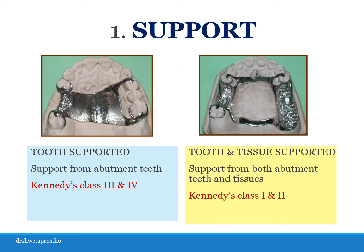If we talk about RPD, removable partial denture, see the first picture — there is a tooth bounded saddle. The source of support in this case will be the teeth or the abutments on which the rests are placed. Now see the second picture: on one side there is a tooth bounded saddle, and on the other side there is a distal extension edentulous space — a distal extension saddle area with no distal abutment. So in this case, the prosthesis will get support from both the teeth and the tissue.